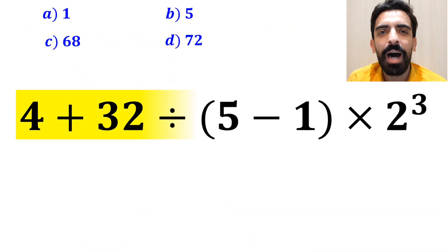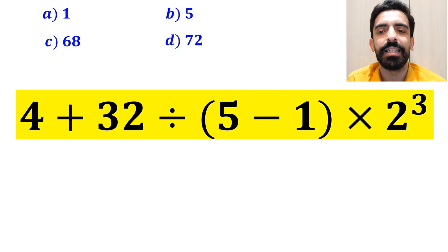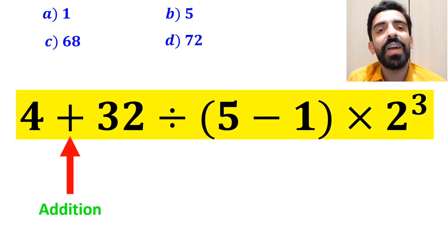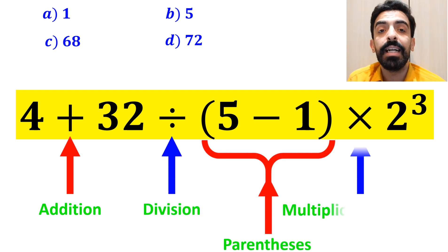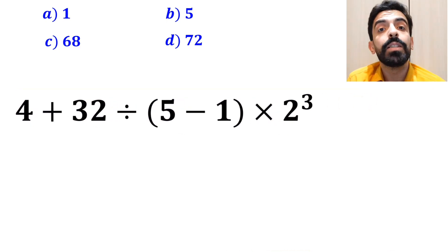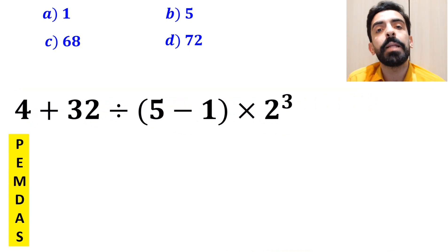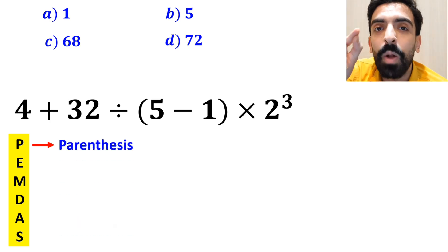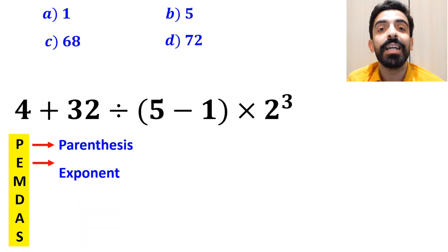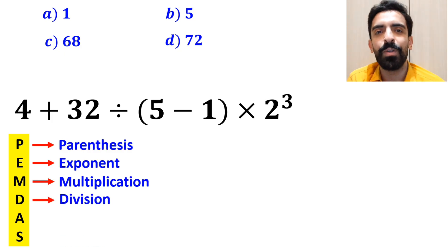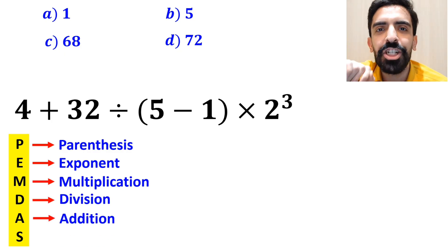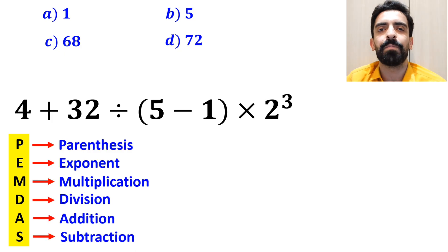Now let me show you how to solve this expression properly. To solve this question, we must follow the PEMDAS rule. P stands for parenthesis, E stands for exponent, M stands for multiplication, D stands for division, A stands for addition, and S stands for subtraction. We must follow the order of operations step by step from top to bottom.